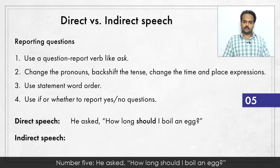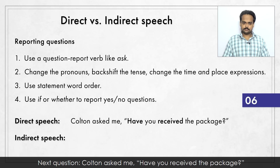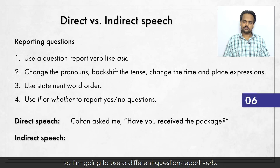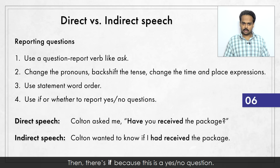Number five: He asked, "How long should I boil an egg?" The reported question is: he asked how long he should boil an egg. Remember, "should" does not backshift. Next question: Colton asked me, "Have you received the package?" I'm going to use a different reporting verb this time. Colton wanted to know if I had received the package. Instead of "asked", I've said "wanted to know". Then there's "if", because this is a yes or no question. The present perfect question in direct speech gets backshifted to a past perfect tense statement.